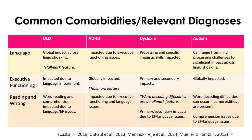If you have decoding issues, it takes more cognitive resources to decode words and you don't have as much mental bandwidth left over for comprehension. That affects comprehension, but executive functioning issues can also impact comprehension independently. So we have to address it at both angles.